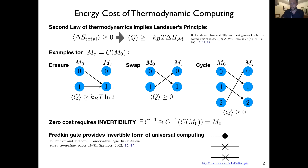For instance, within the classic erasure, this means that you require at least kT log 2 of energy dissipated — or rather sent into the heat bath. For a swap, where you're exchanging a zero and a one, you don't require any energy. And for any sort of cycle, you don't require any energy as well.